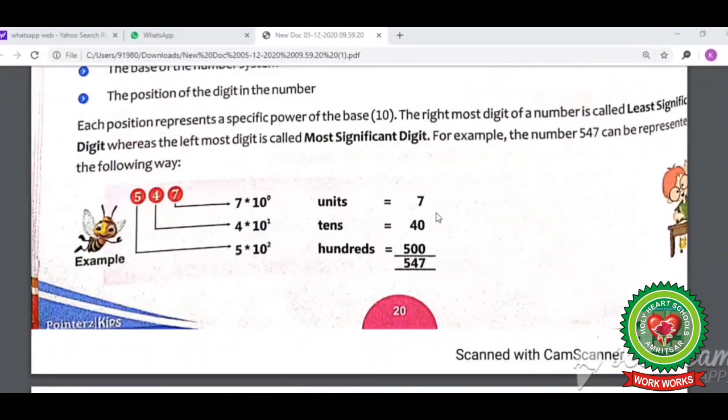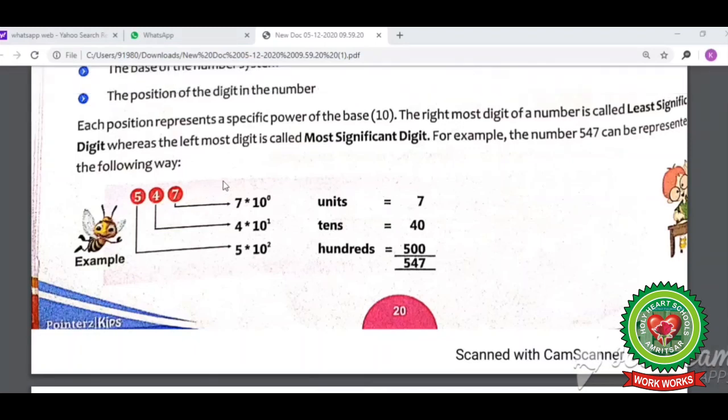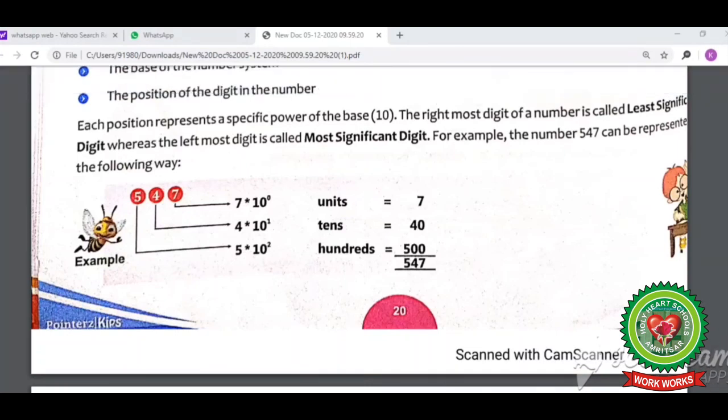The positional value of each digit increases tenfold as we move from right to left. In this example, 5, 4, and 7 are the face values, and their place values are hundreds, tens, and units. The place value depends on the position of the digits in the number.